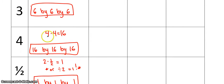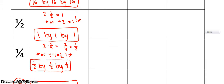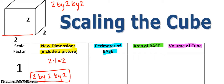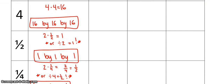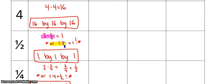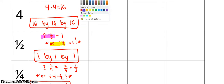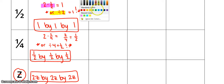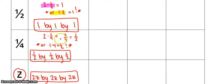We already did scaling by 3. For scale factor 4, 4 times 4 is 16, so you'd have a 16 by 16 by 16. Now, 1 half means you're going to take half the size — half of 2 is going to be 1. You can think of it as 2 times one-half, which gives you 1, or multiplying by one-half is the same as dividing by 2. So you get a 1 by 1 by 1 cube. Similarly for 1 fourth, that means 2 times one-fourth, which is one-half, or 0.5 — you can also think of it as dividing by 4. So it's a half by a half by a half.